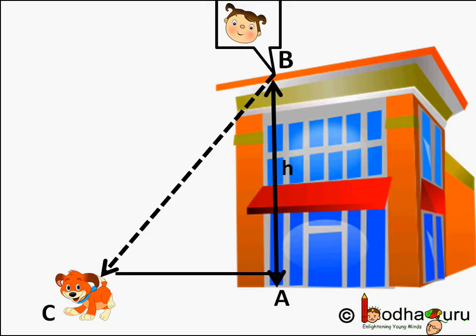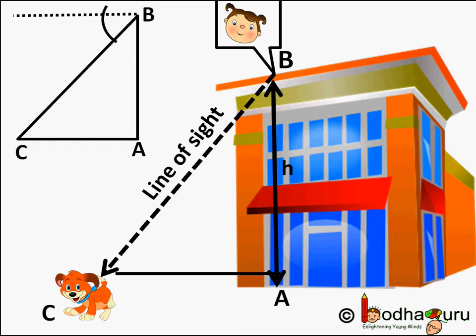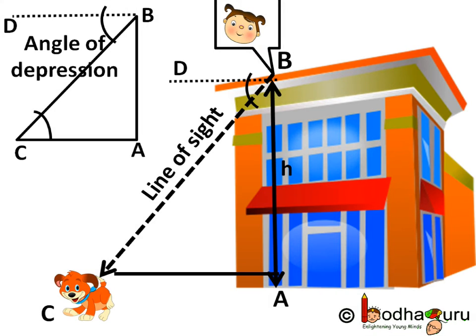So here the angle formed by the line of sight with the horizontal plane is called the angle of depression. So angle DBC, think DB is a line parallel to the ground, so angle DBC is the angle of depression.